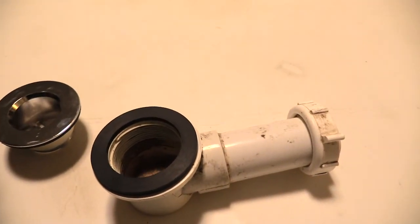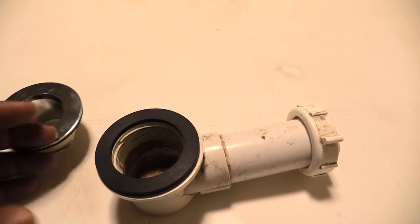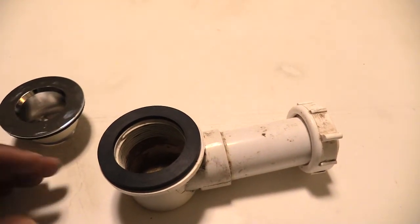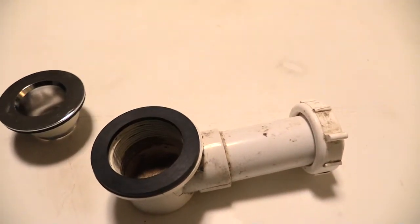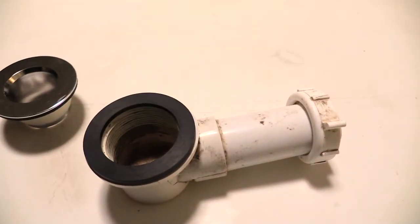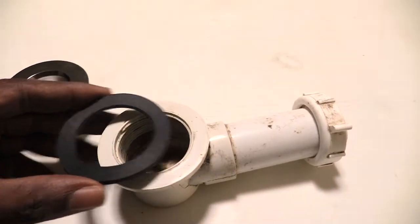To put this washer on you have to go underneath your house or down in your basement wherever your pipe is draining out to where your tub is draining to and replace this washer right here. Sometimes this washer can get ate up over time, it could just go bad and you need a new one.